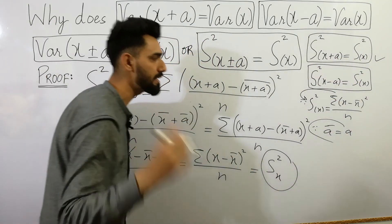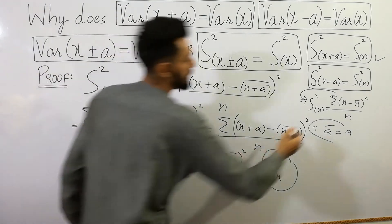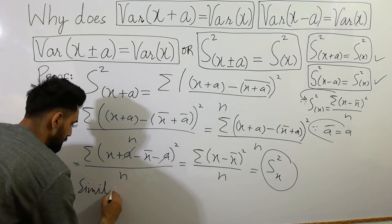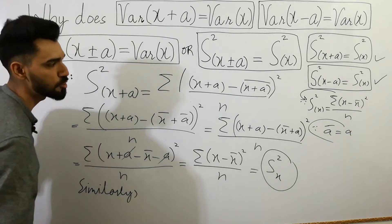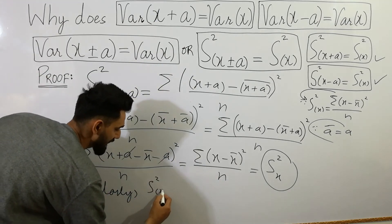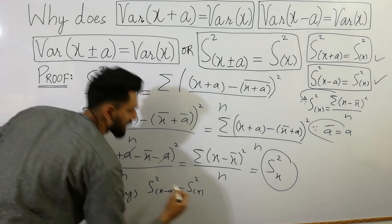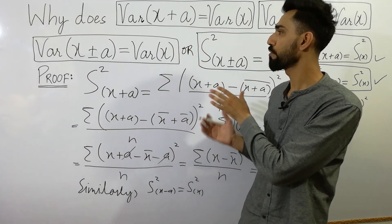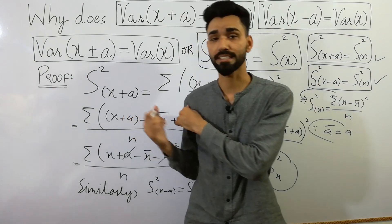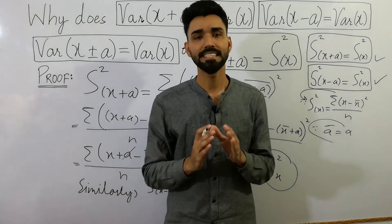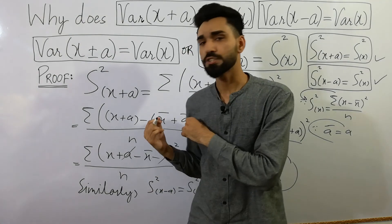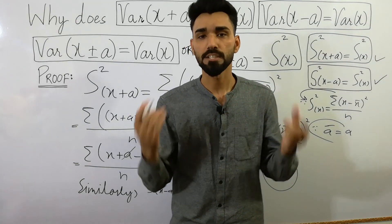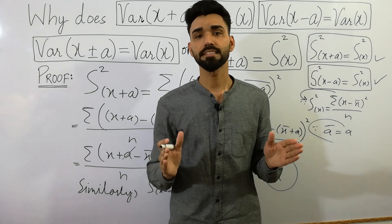Similarly, you can also prove that variance of X minus a is equal to variance of X. I hope the concept is clear about how to prove that variance of X plus-minus a equals variance of X, because variance is always positive — variance can never be negative. Thanks for watching this video. Please share this lecture with your classmates and friends so they also benefit, and don't forget to like and subscribe. Goodbye.